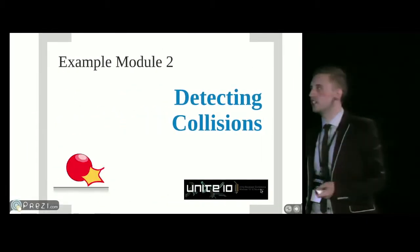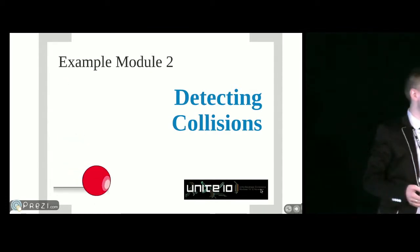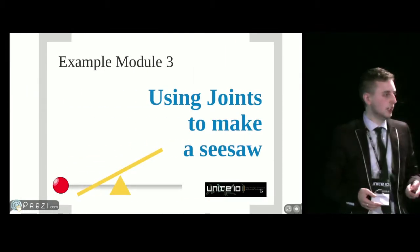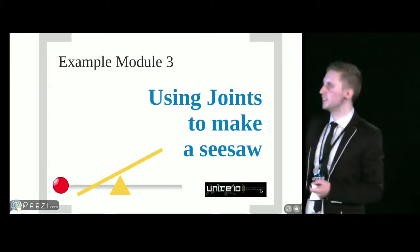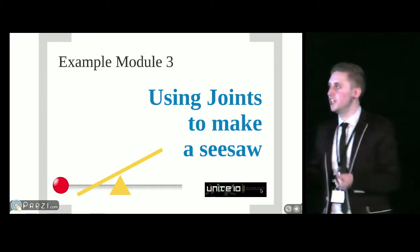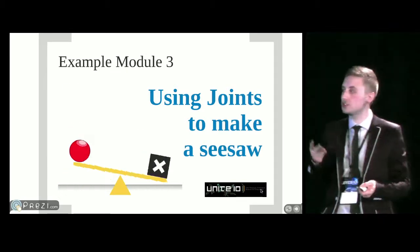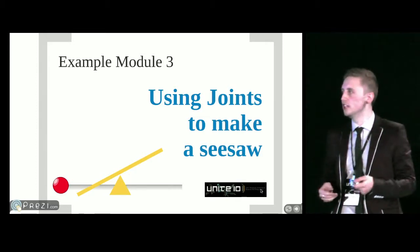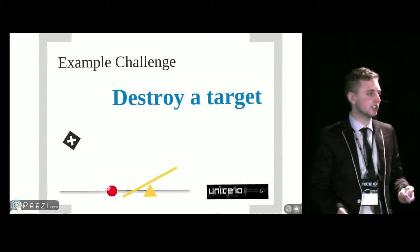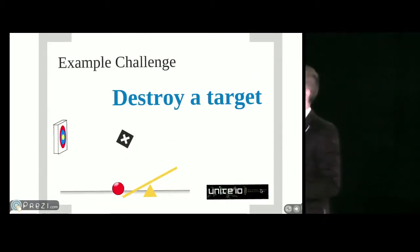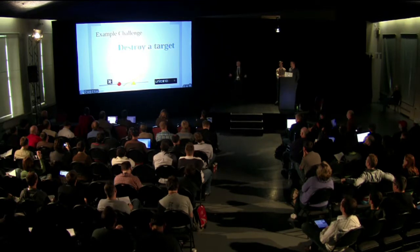A second module might be detecting collisions — one object hits another, you detect when that happens, and you can throw something into it. A third example might be using a joint to make a seesaw — adding a hinge, getting a reaction. So they've done those three short pieces of information, and I knew that they knew how to achieve those particular game mechanics.